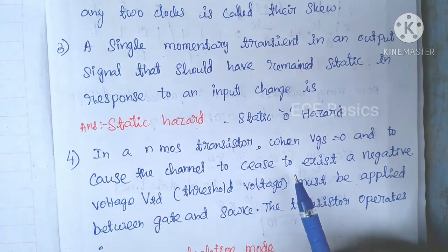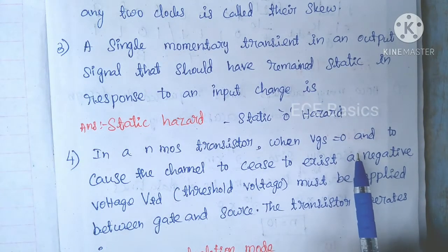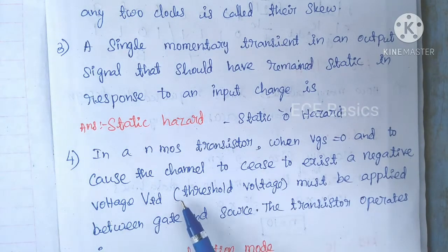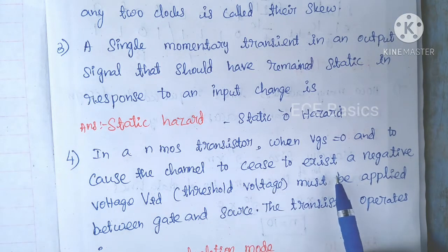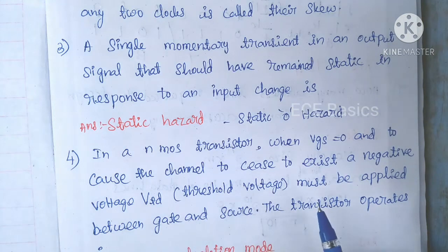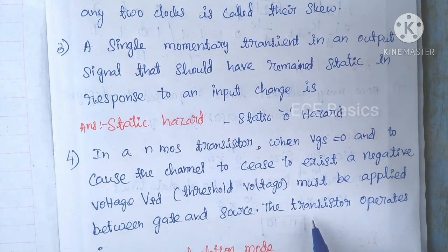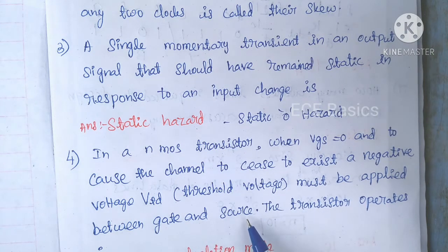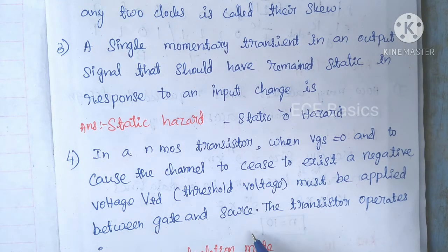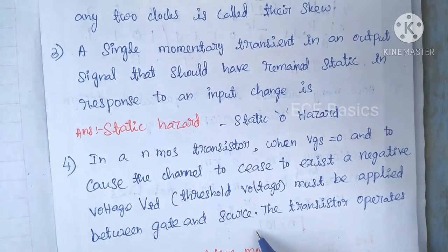Next question: For an NMOS transistor, when VGS is equal to zero and to cause the channel to cease to exist, a negative voltage VGS must be applied between gate and source. Since the gate-to-source voltage is negative, VGS negative — at that moment it is depletion mode.